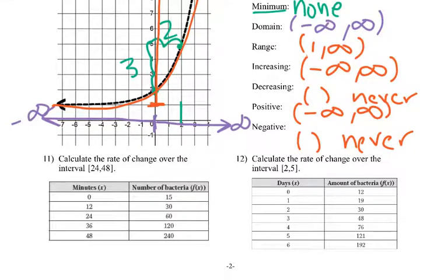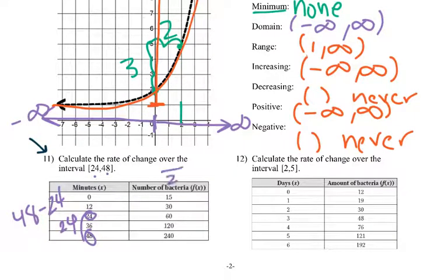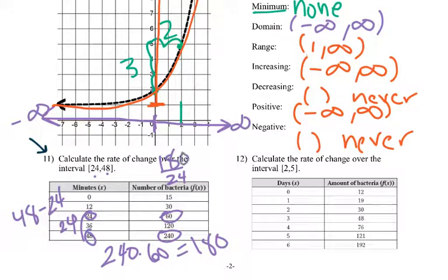Let's take a look at some more rate of change. Rate of change from 24 to 48 — so 48 minus 24 gives me 24 for the x, that's the bottom of our fraction. Then 240 minus 60 gives us 180. So we get 180 over 24, which reduces to 30 over 4, then 15 over 2, or 7.5.